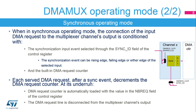Upon the synchronization event, the selected DMA request line is connected to the multiplexer channel's output. From this point on, each served DMA request on the selected DMA request line decrements the DMA request counter. At its underrun, the DMA request counter is automatically loaded with the value in the NB-REQ field of the control register, and the DMA request line is disconnected from the multiplexer's channel output. Thus, the number of DMA requests transferred to the multiplexer's channel output following a synchronization event is the value in the NB-REQ field plus one.